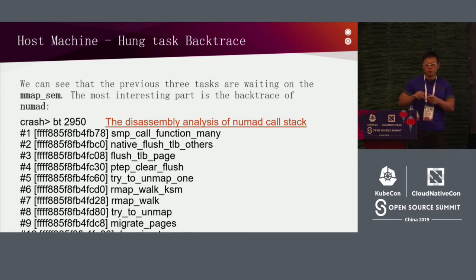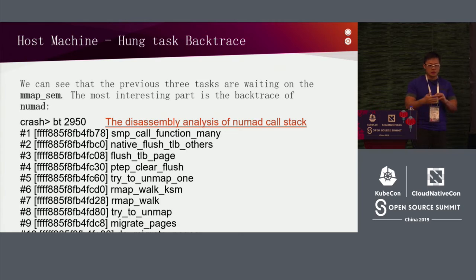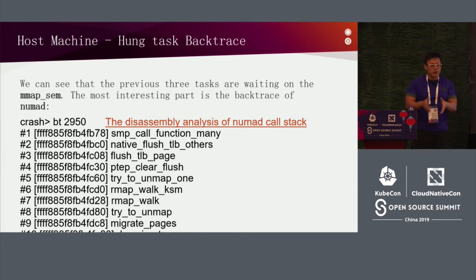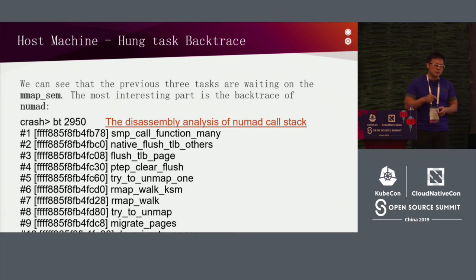NUMA auto-balance checks whether memory access is remote. If it is, it migrates the page to the local node to reduce memory latency. Looking at its backtrace, NUMA-D finds a KSM page node and wants to migrate this KSM page to a local node. But there's an issue that happens during this migration process.